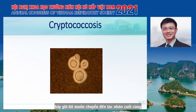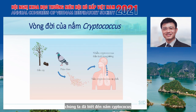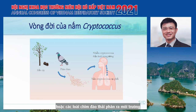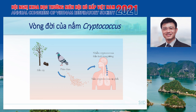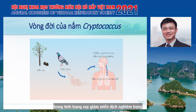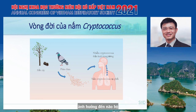Moving to the last pathogen—cryptococcus, which causes cryptococcosis. We are familiar with cryptococcal meningitis, but what about pulmonary cryptococcosis? Cryptococcus exists in tree hollows or bird droppings. Once a patient inhales the spore or desiccated yeast cells into the lung, it can cause pulmonary cryptococcosis, and in severely immunocompromised patients, the cryptococcus can disseminate to the brain causing cryptococcal meningitis.